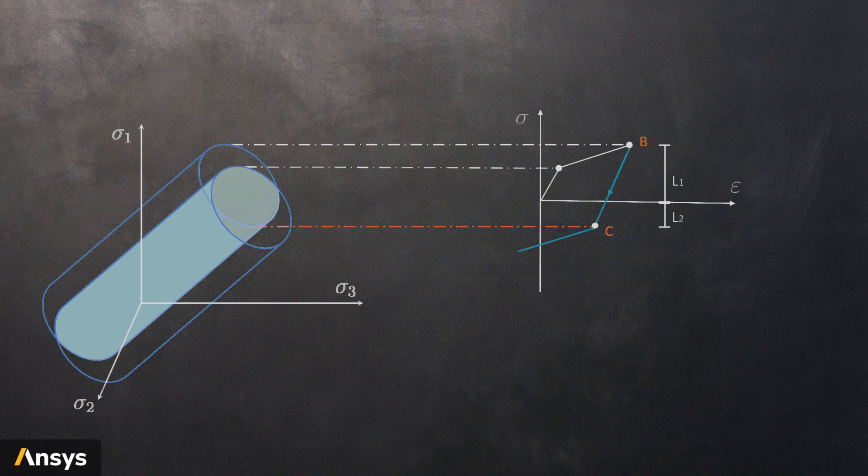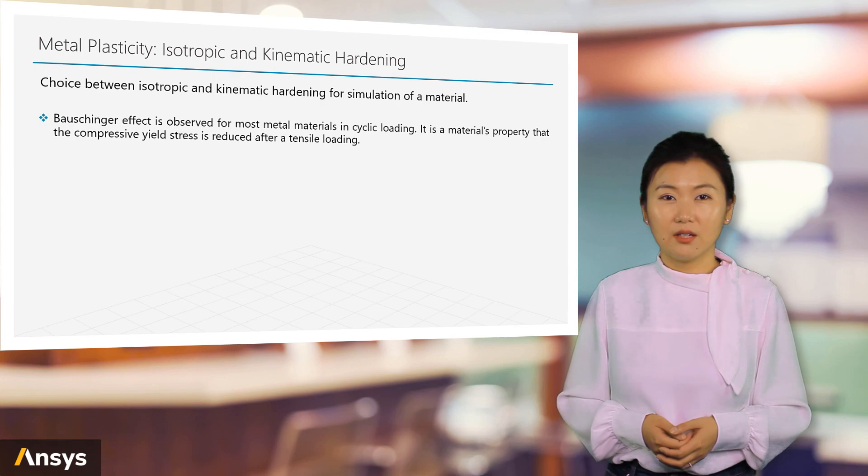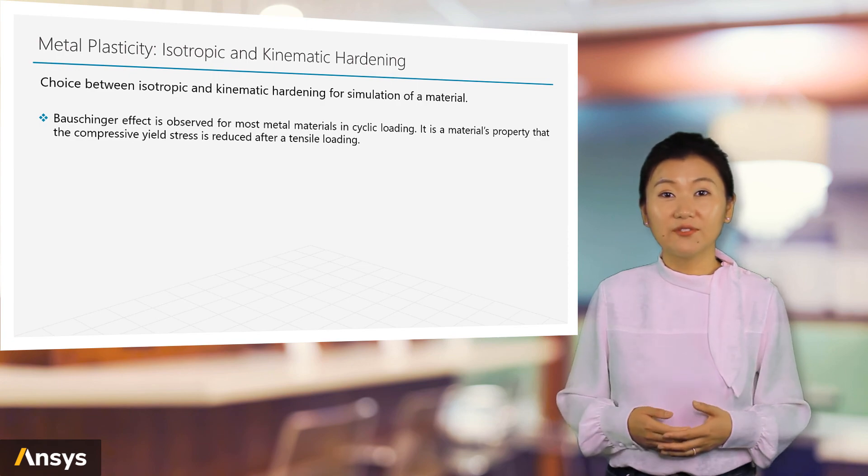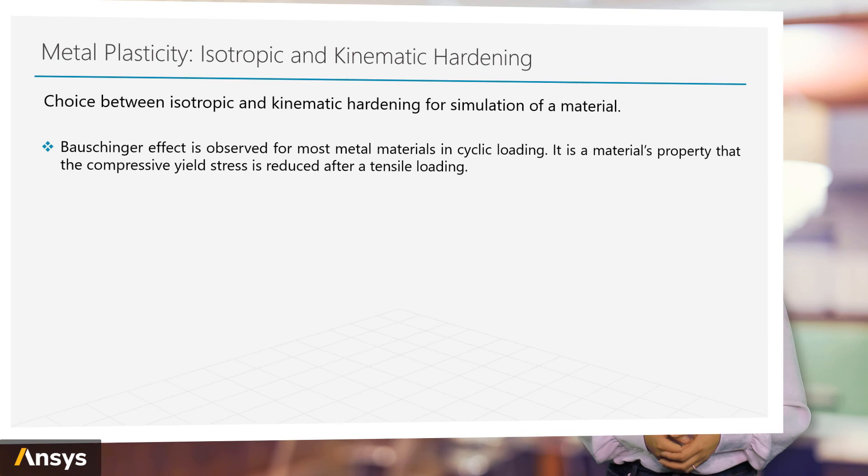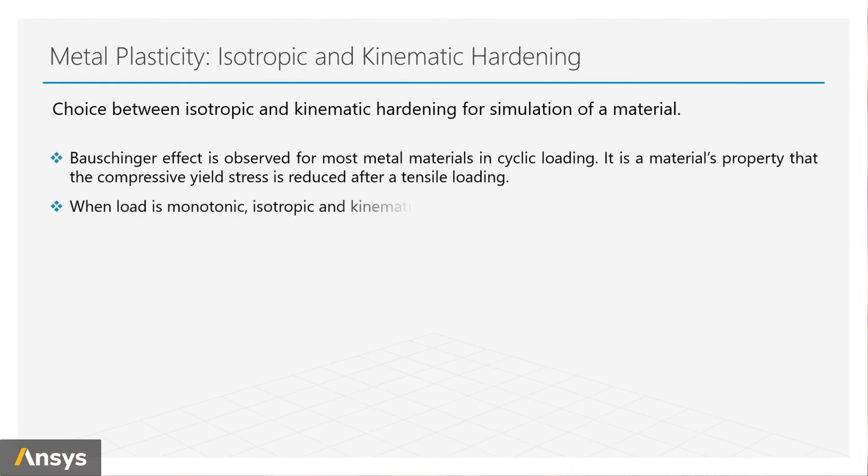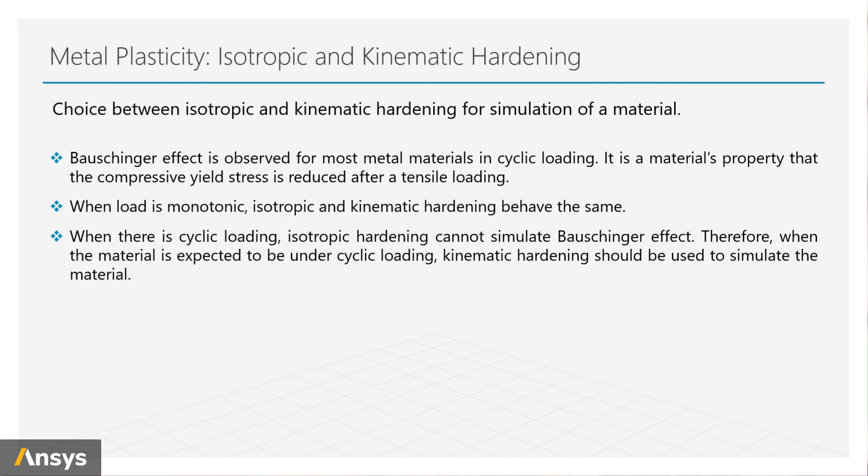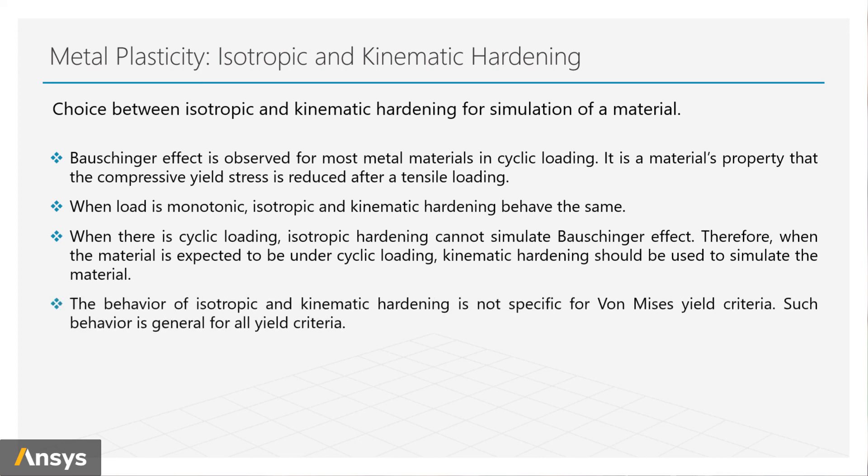Such shift of yield points in opposite direction is called Bauschinger effect. The Bauschinger effect is observed for most metal materials in cyclic loading. It's a material's property that the compressive yield stress is reduced after a tensile loading. In summary, we can say that when the load is monotonic, isotropic and kinematic hardening behave the same. When there is cyclic loading, isotropic hardening cannot simulate the Bauschinger effect. Therefore, when the material is expected to be under cyclic loading, kinematic hardening is more realistic.